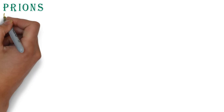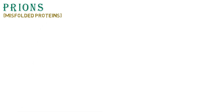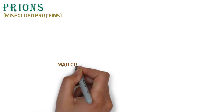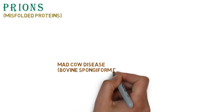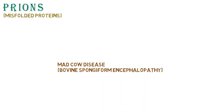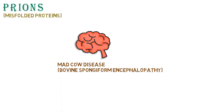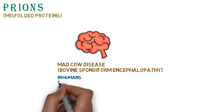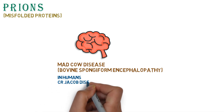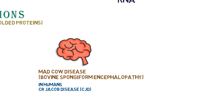Now we can discuss prions. Prions are infectious agents made of abnormally folded or misfolded proteins. Their size is similar to viruses. These agents cause diseases such as mad cow disease, also known as bovine spongiform encephalopathy (BSE). Prions attack and destroy the cow's nervous system. A related disease in humans is Creutzfeldt-Jakob disease (CJD), named after Jacob who discovered it.